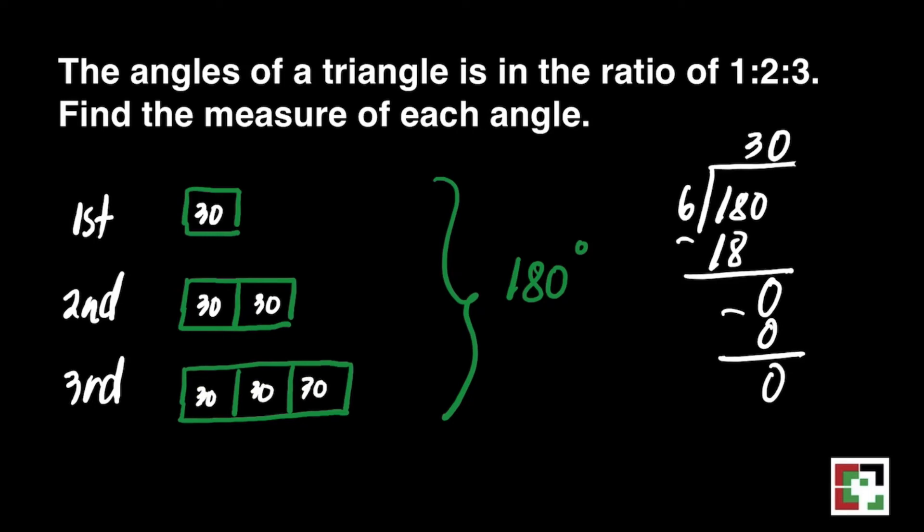And we're looking for the measure of each angle. So for the first angle, that's 30 degrees. 2nd angle, 60 degrees. And 3rd angle, that's 90 degrees. And these are our final answers for this question.